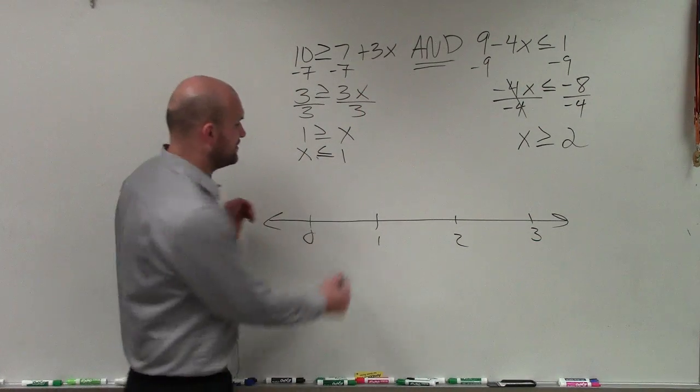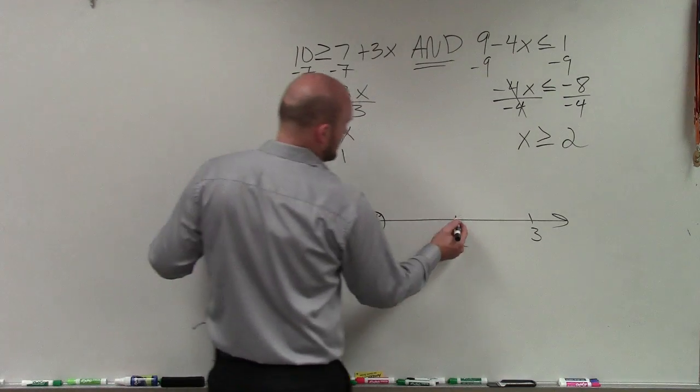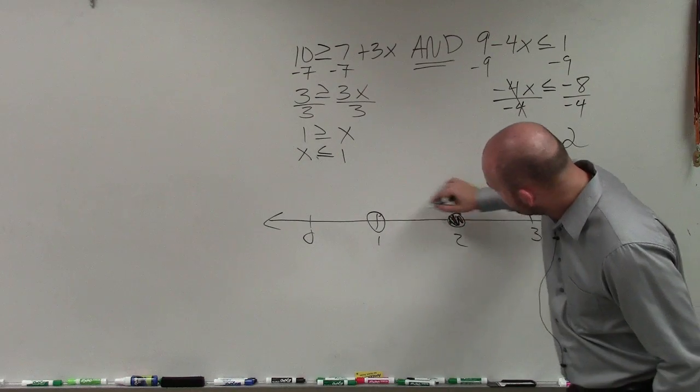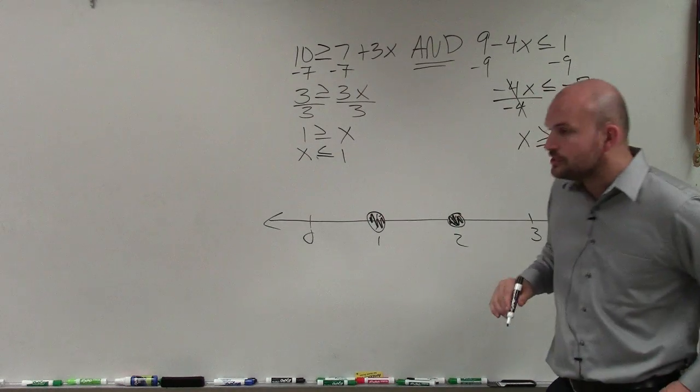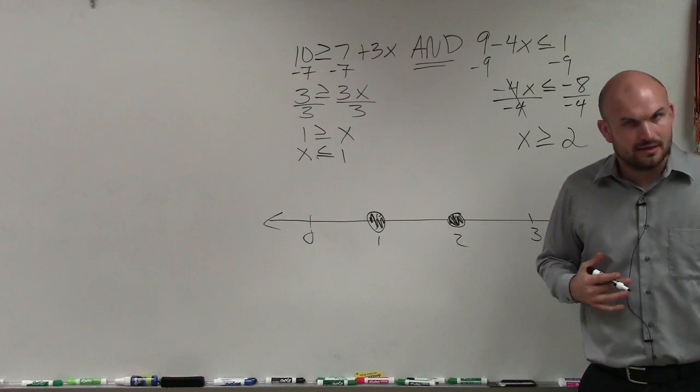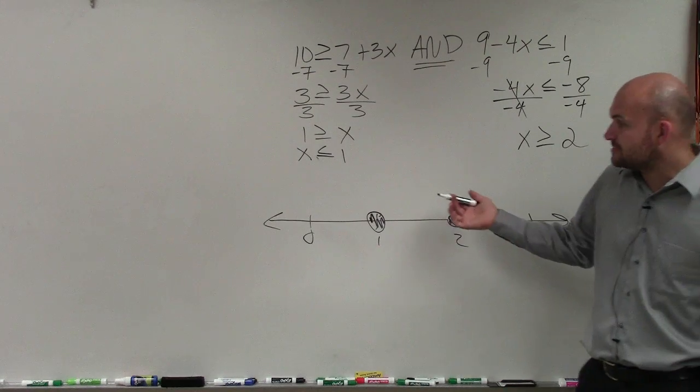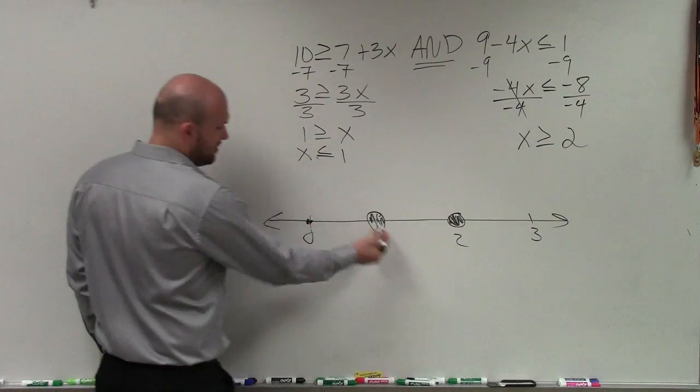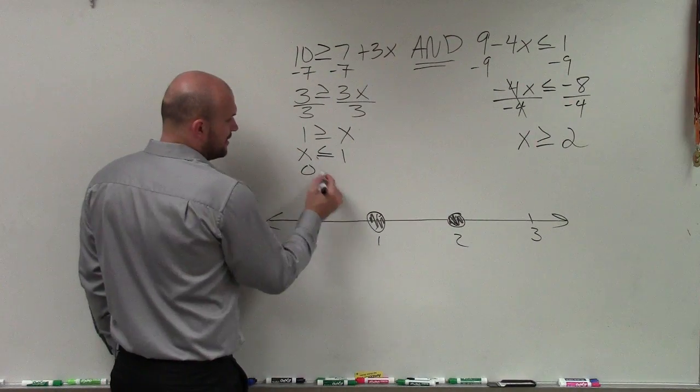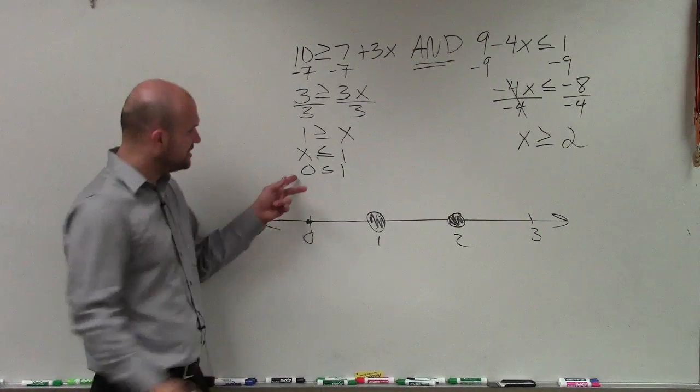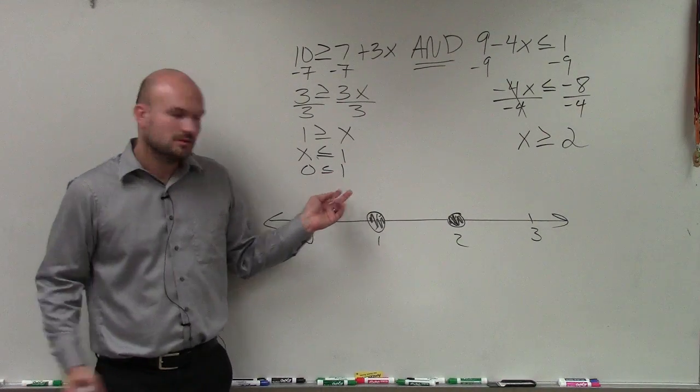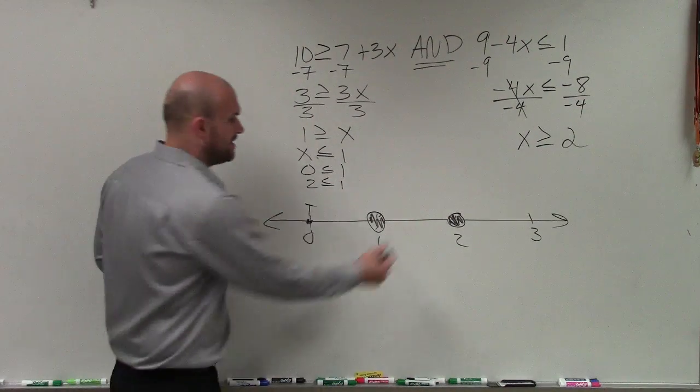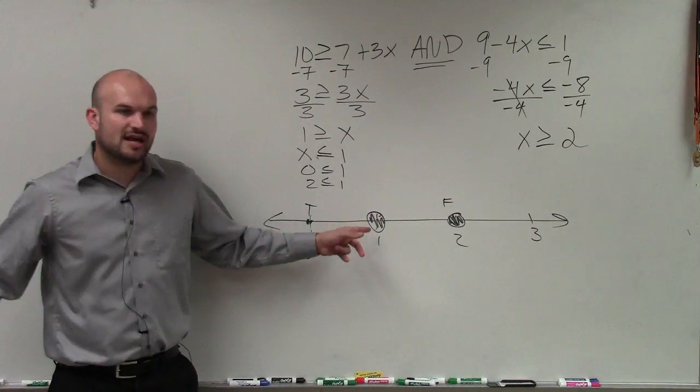So now let's graph each one of these separately. So I'll put a nice big circle here and a nice big circle there. Again, these are less than or equal to or greater or equal to. So they are part of the solution. Now, to determine should I shade to the left or to the right, sometimes you guys can say, all right, what is less than or equal to 0? I always like to just pick two points. Pick a point to the left, pick a point to the right. Whatever point is true, that's where you shade. Is 0 less than or equal to 1? Yes. That's true. Is 2 less than or equal to 1? No. That's false. So you always shade towards where it's true.